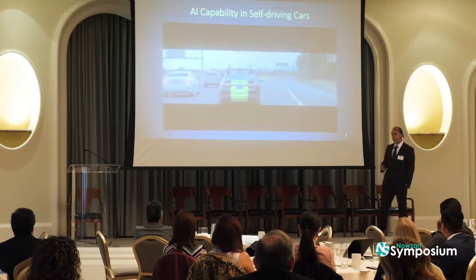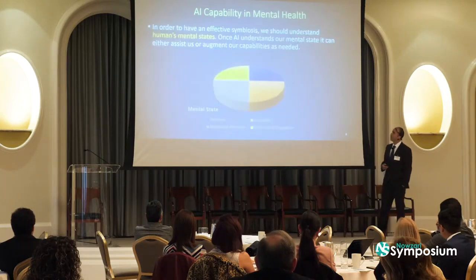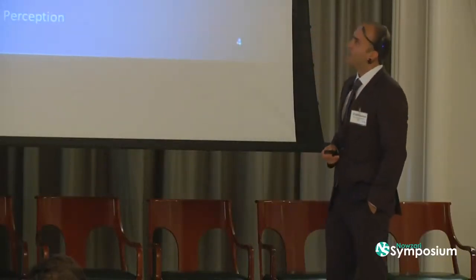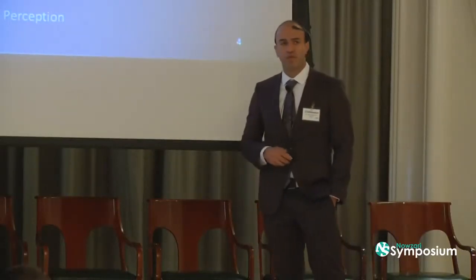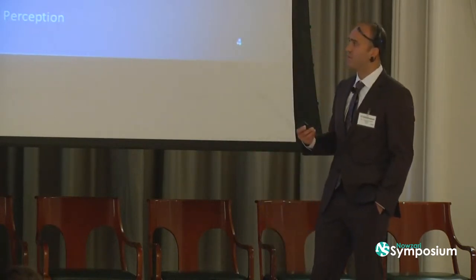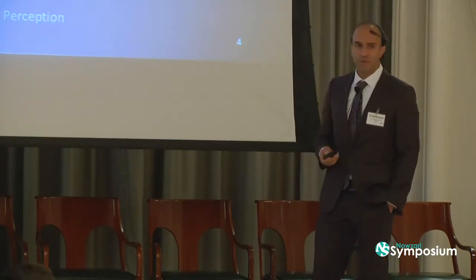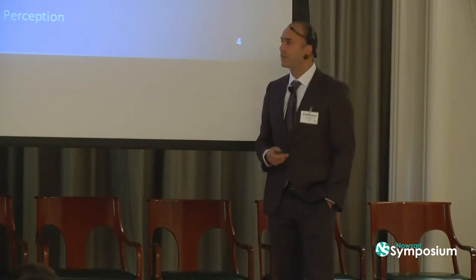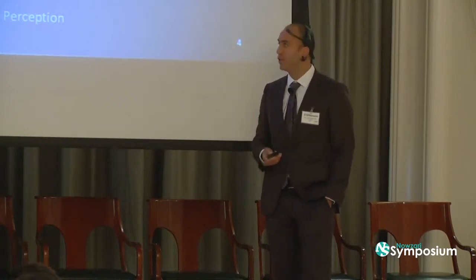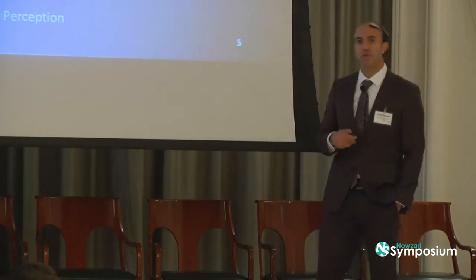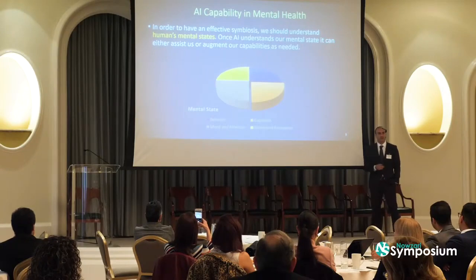So with that, I want to jump into my favorite topic in artificial intelligence, which is the application of artificial intelligence in mental health. In order to have a good symbiosis between human and machine, we should have a good understanding of what mental states are. Mental states are usually defined and influenced by our behavior, mood and affection, belief and perception, and cognition — all sorts of elements such as relaxation, focus, and the amount of usage of working memory. I want to focus on the cognition side and talk about how we're going to use AI to assess the cognitive load of human beings.